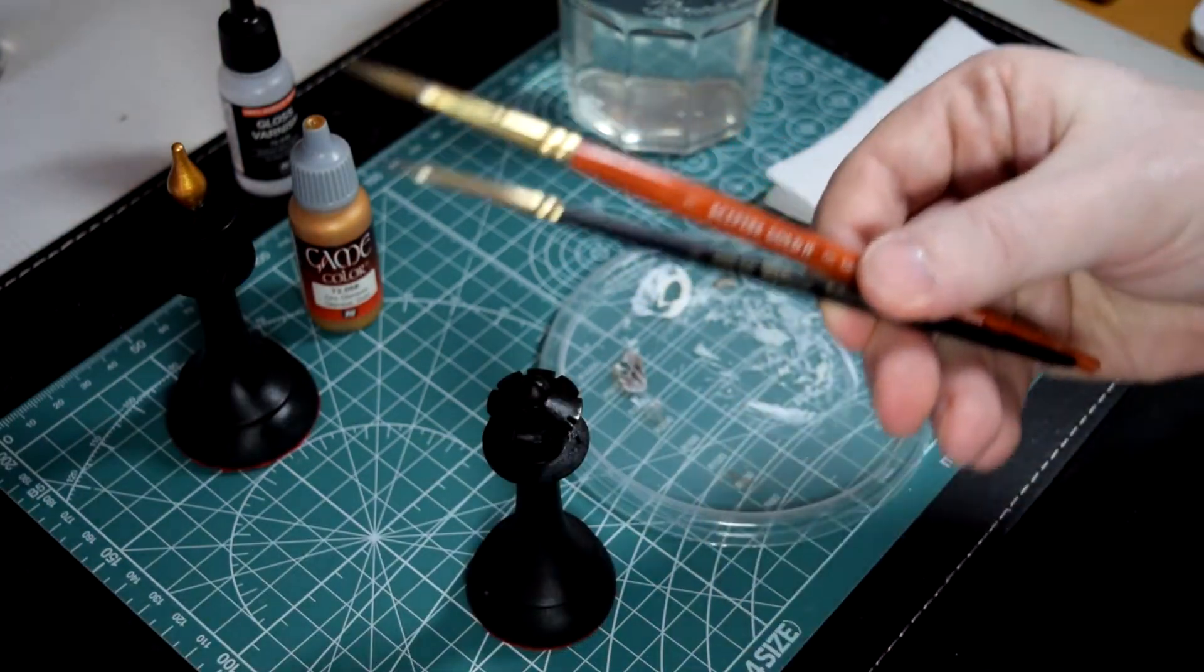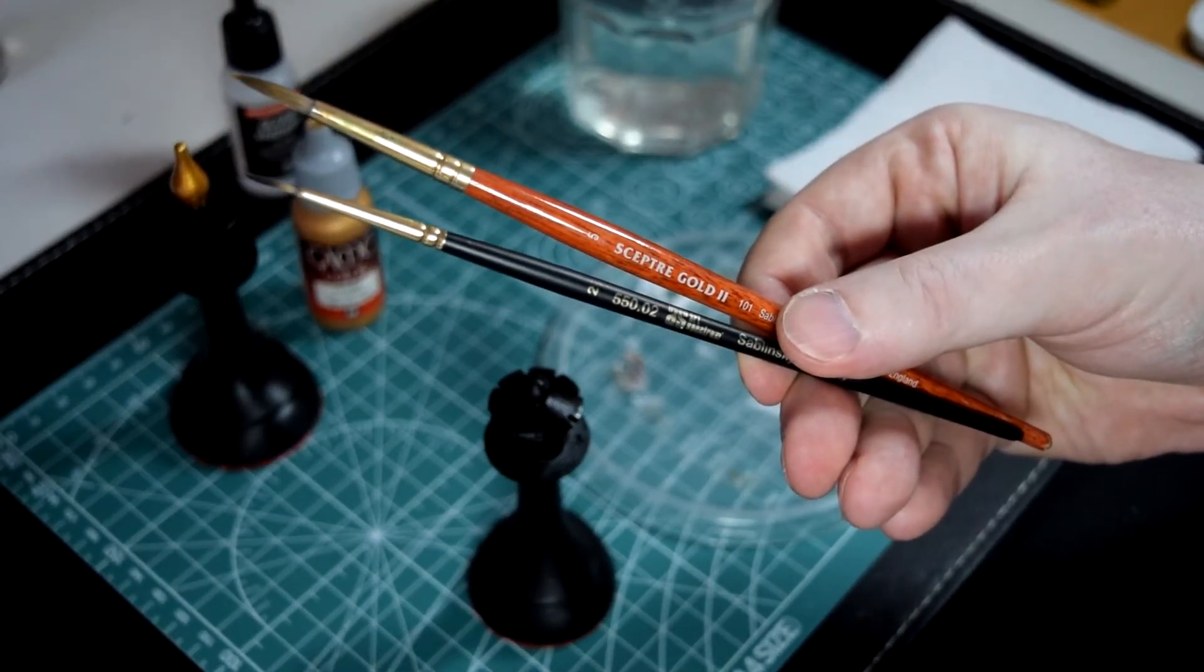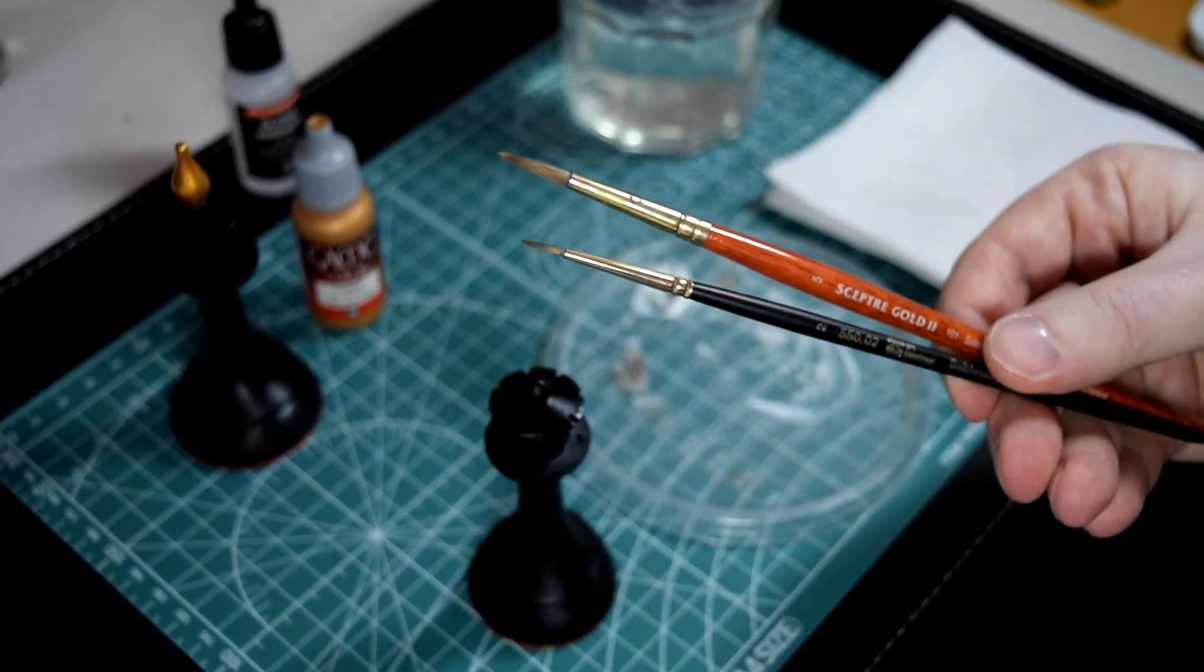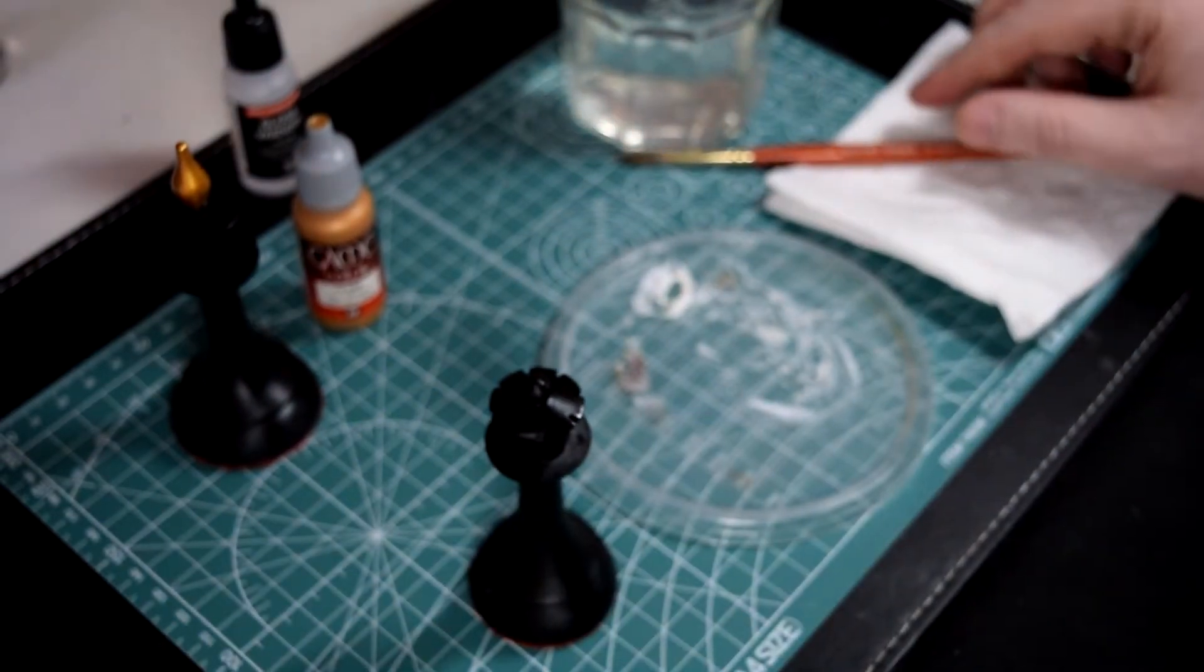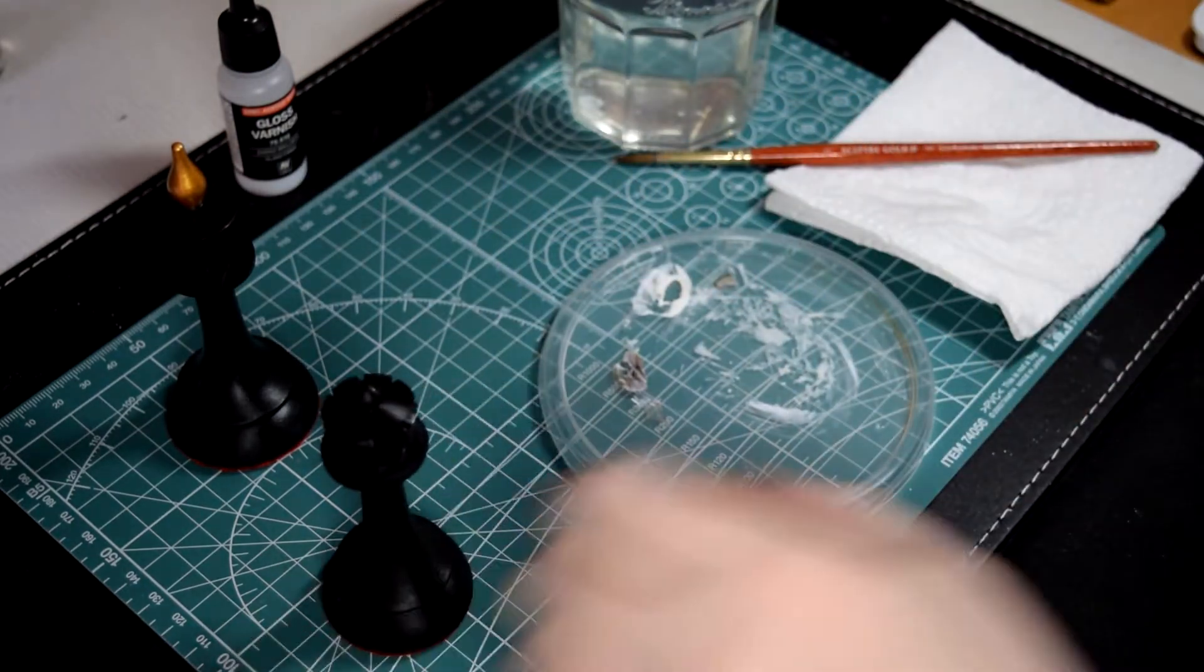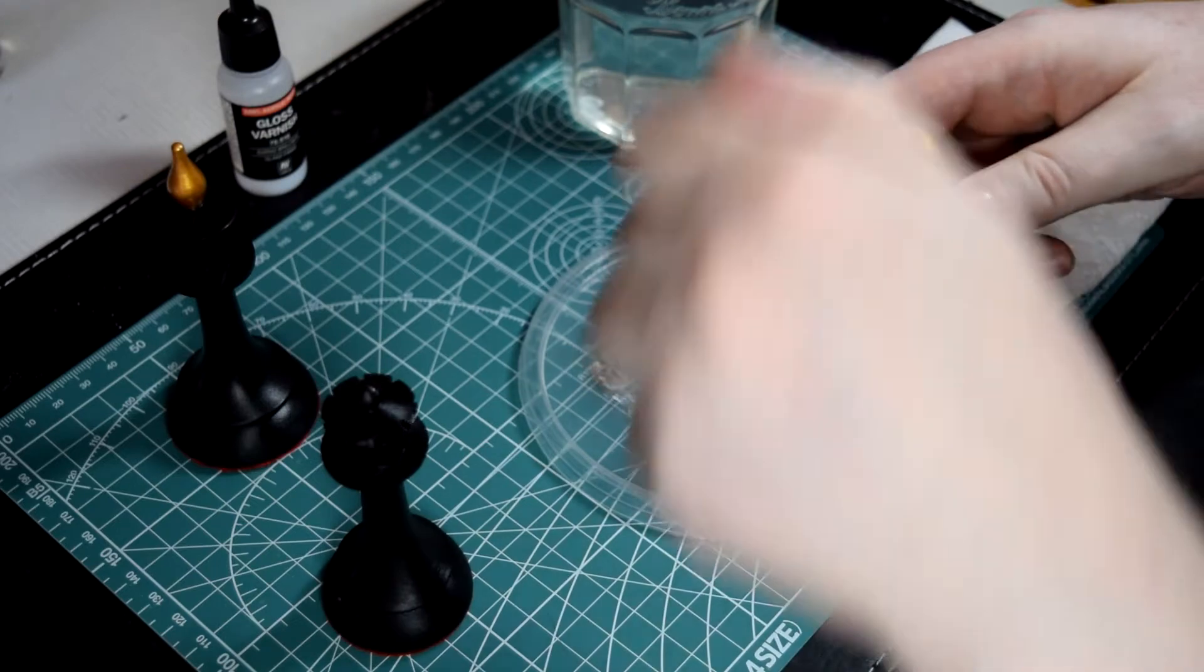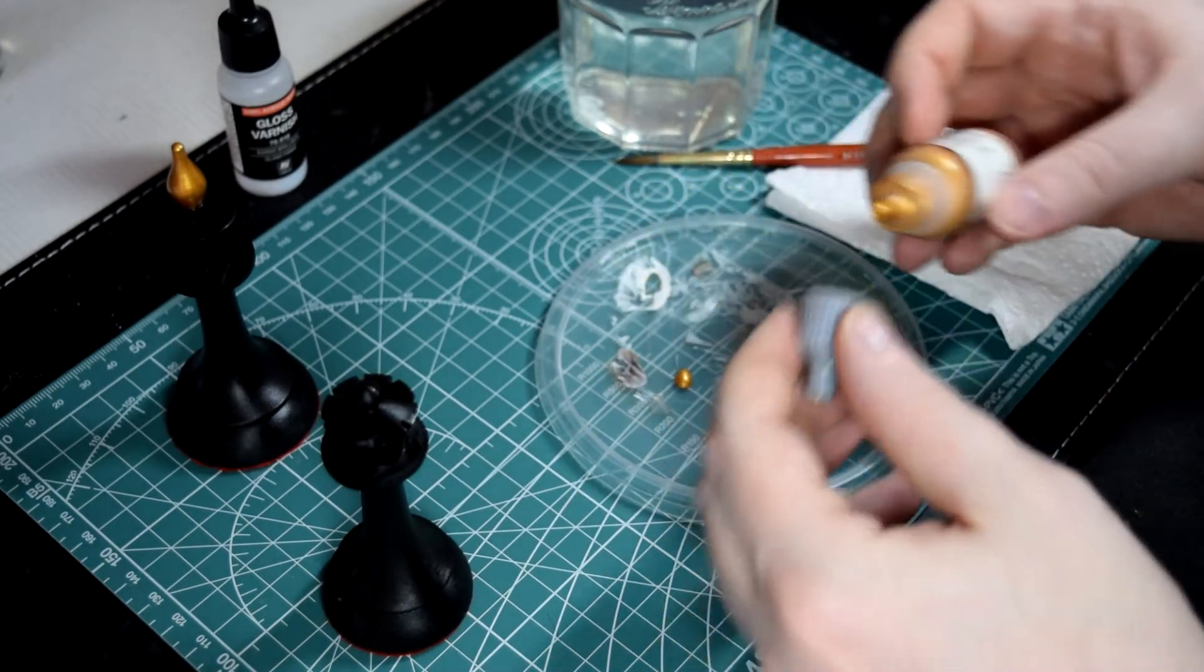I always recommend using the largest brush possible when you're painting. Larger brushes don't leave brush marks. If you try to cover a large surface with a small brush, you get a lot of brush marks, a rough uneven surface. So it's better to use the big brush for as long as possible. I'm going to paint most of this finial using this big brush, and then switch to the smaller one when I need to paint very close to the black edge.